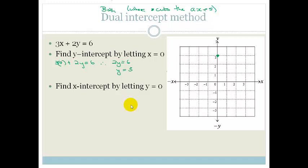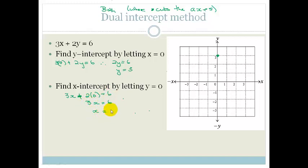To find the x-intercept, we let y equal 0. We do that because along the x-axis, y is always 0. So: 3x plus 2 times 0 equals 6, therefore 3x equals 6, therefore x equals 2. So if we plot these two points on the graph — y-intercept at 3, x-intercept at 2 — and join the dots, there is our graph. It's going through 3 and 2.